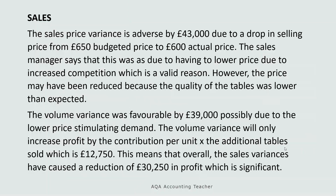Then I would take each pair of variances and talk about those. You wouldn't necessarily need to label your paragraph, but I've said here that the sales price variance is adverse by £43,000 due to a drop in selling price from the budgeted £650 to the actual £600. The sales manager says this was due to having to lower the price due to increased competition, which is a valid reason. However, the price may have been reduced because the quality of the tables was lower than expected. The volume variance was favourable by £39,000, possibly due to the lower price stimulating demand. The volume variance will only increase profit by the contribution per unit multiplied by the additional tables sold, which is £12,750. This means overall the sales variances have caused a reduction of £30,250 in profit, which is significant.